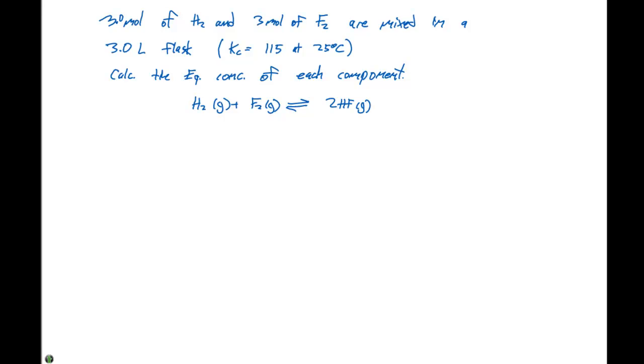For this problem, we have 3.0 moles of hydrogen and 3.0 moles of fluorine gas mixed in a 3.0 liter flask. The Kc is 115 at 25 degrees Celsius. We need to calculate the equilibrium concentration of each component. Here we have H2 gas plus F2 gas in equilibrium with 2HF.